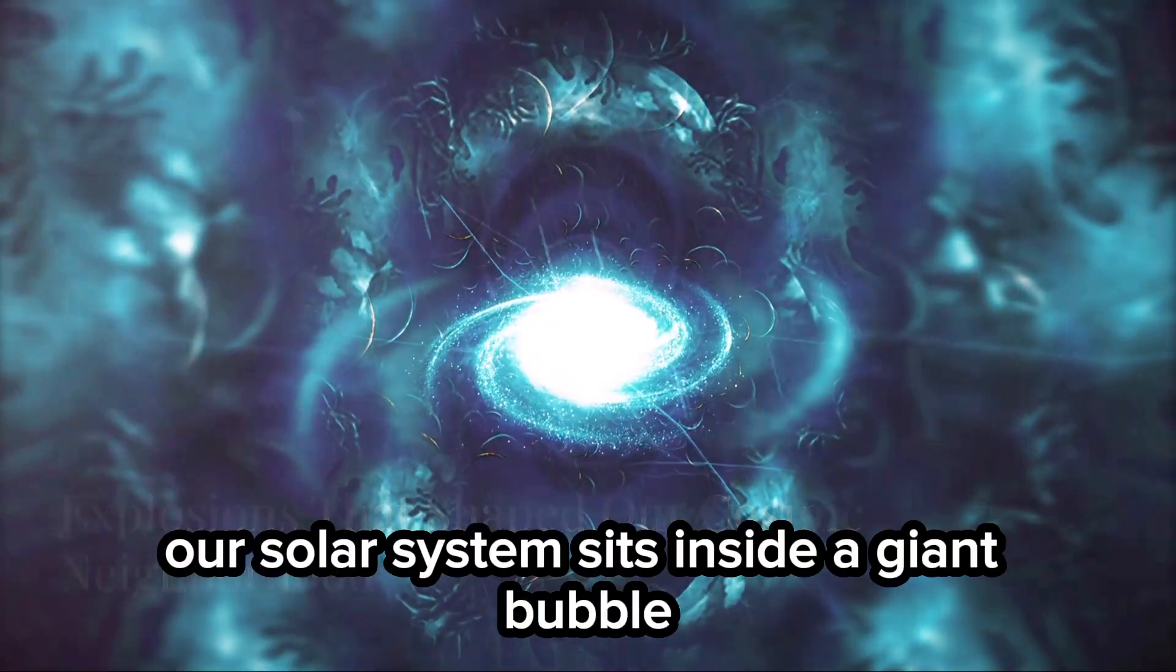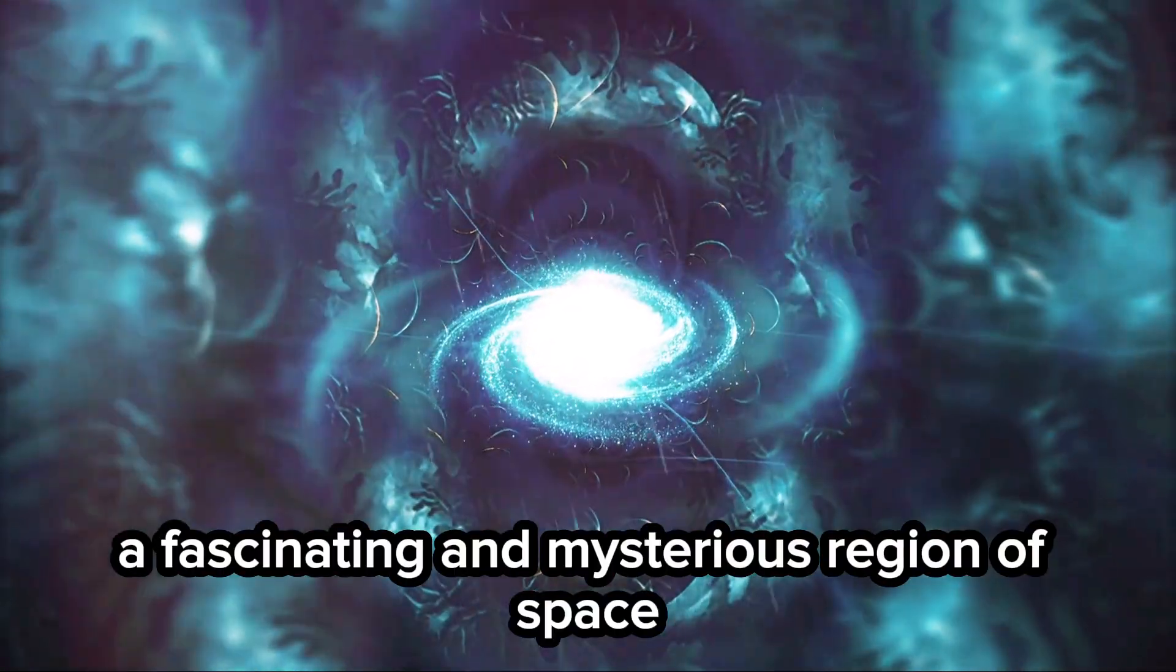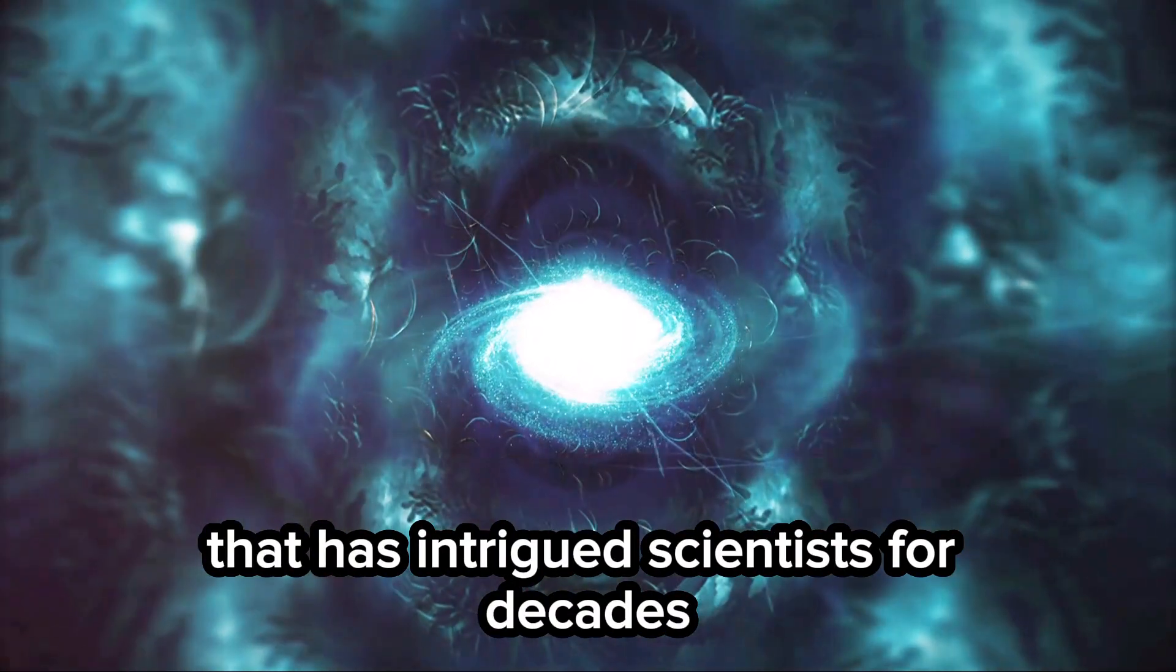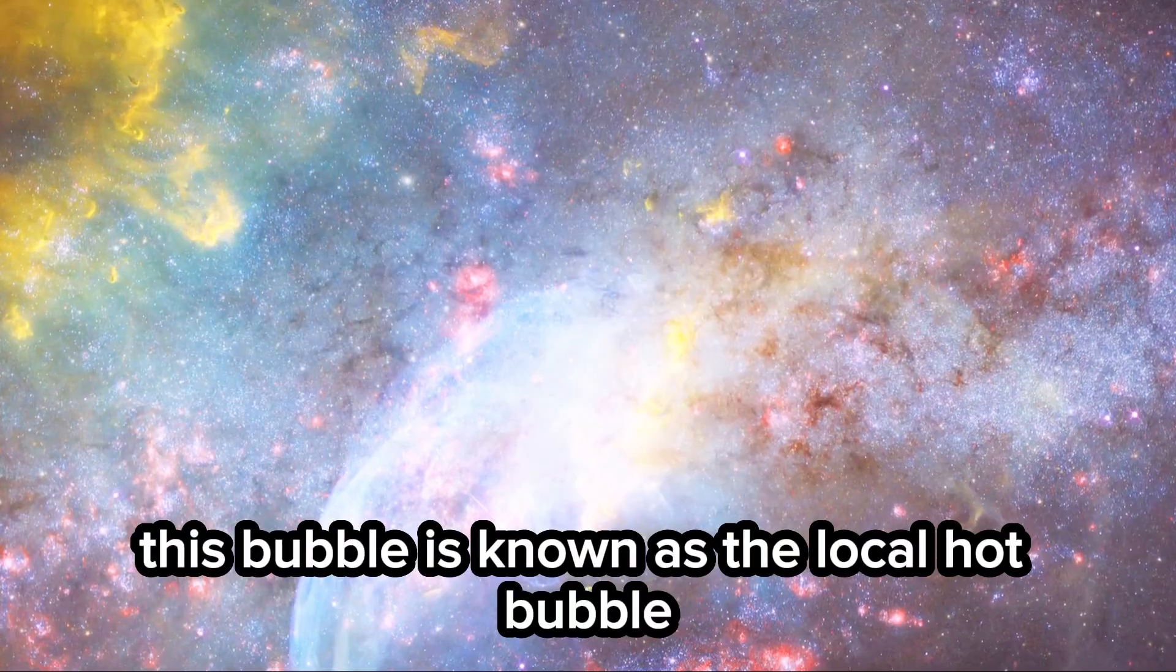Our solar system sits inside a giant bubble, a fascinating and mysterious region of space that has intrigued scientists for decades. This bubble is known as the local hot bubble, a name that hints at its unique and extreme conditions.